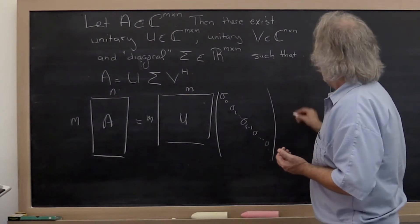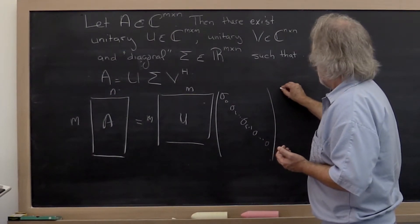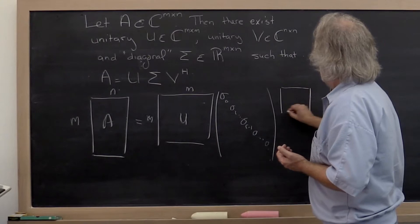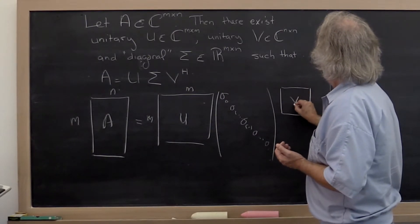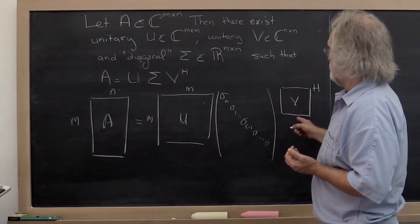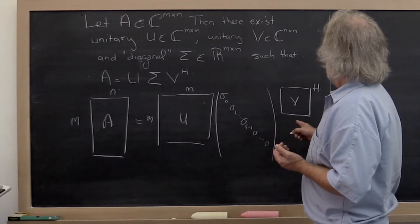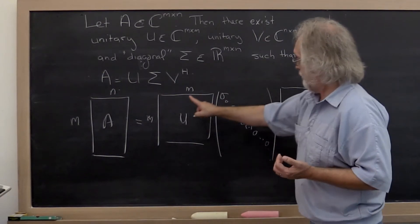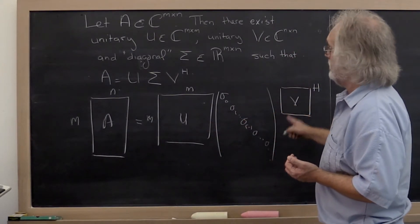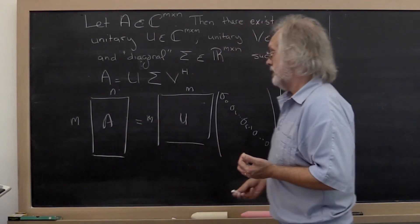And then finally you have a matrix V such that if you take a Hermitian transpose, if you take U times sigma times V Hermitian, you get your matrix A back.